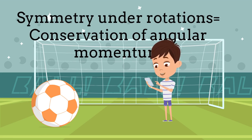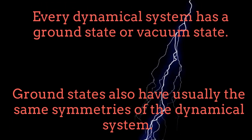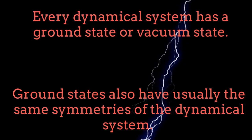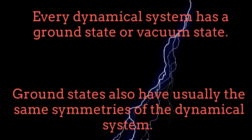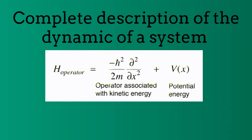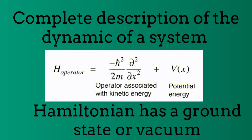The ball does not change under rotation. Every dynamical system has a ground state or vacuum state. Normally, the ground state has the same symmetries of the system. The dynamics of a system, classical or quantum, can be analyzed through the Hamiltonian of the same system, which is simply a kinetic term plus a potential term. The Hamiltonian has a ground state or vacuum state, which corresponds to the lowest energy level.